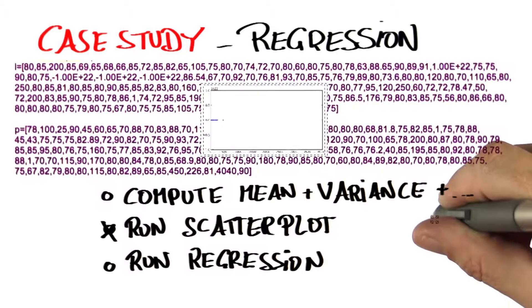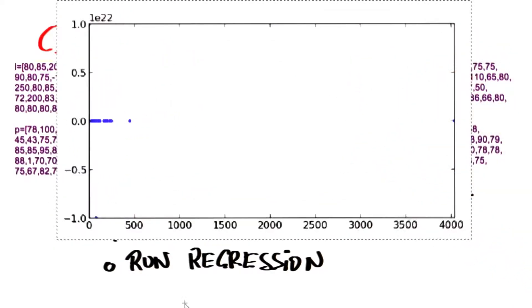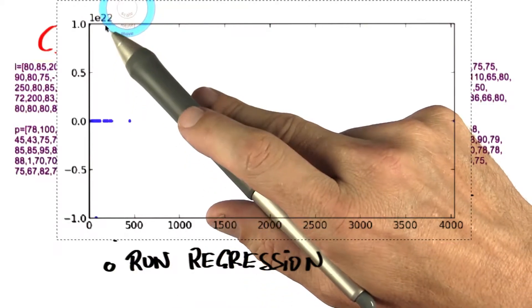So here is the scatter plot for those data points, and it's really interesting. If I look at this, it looks like almost all the guesses are the same.